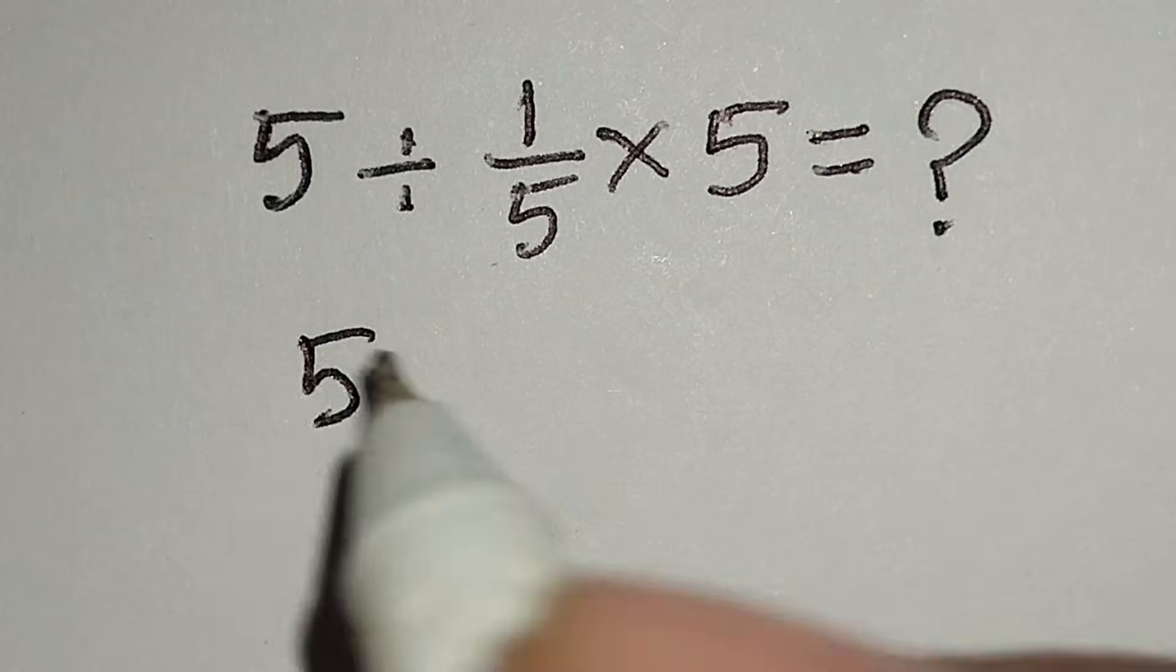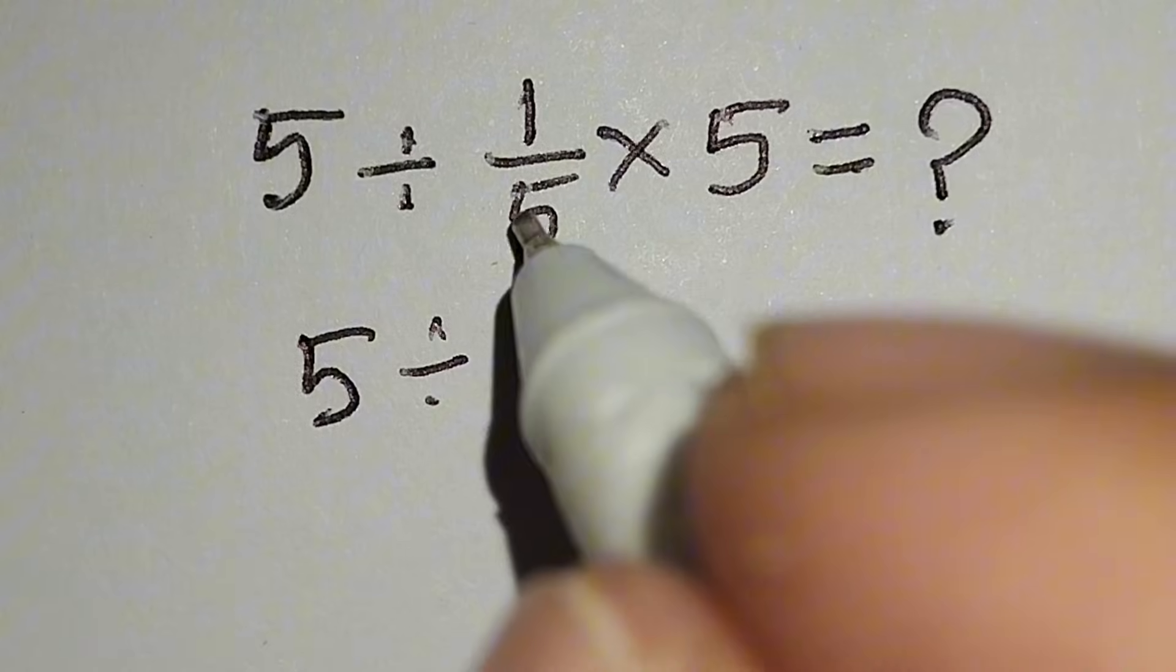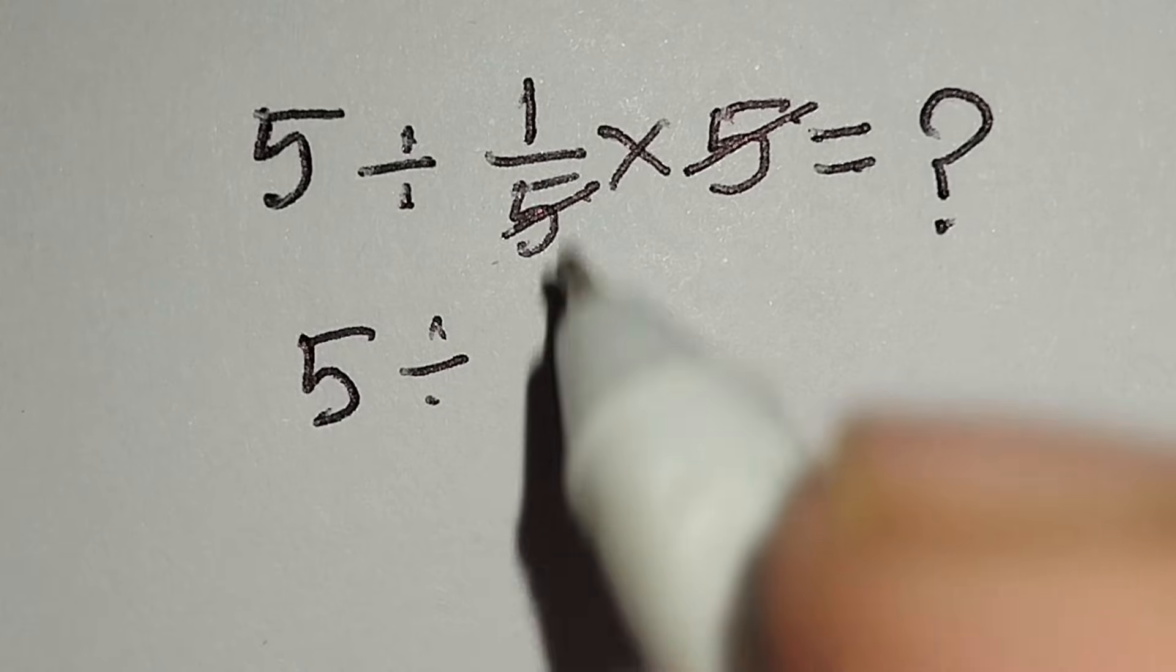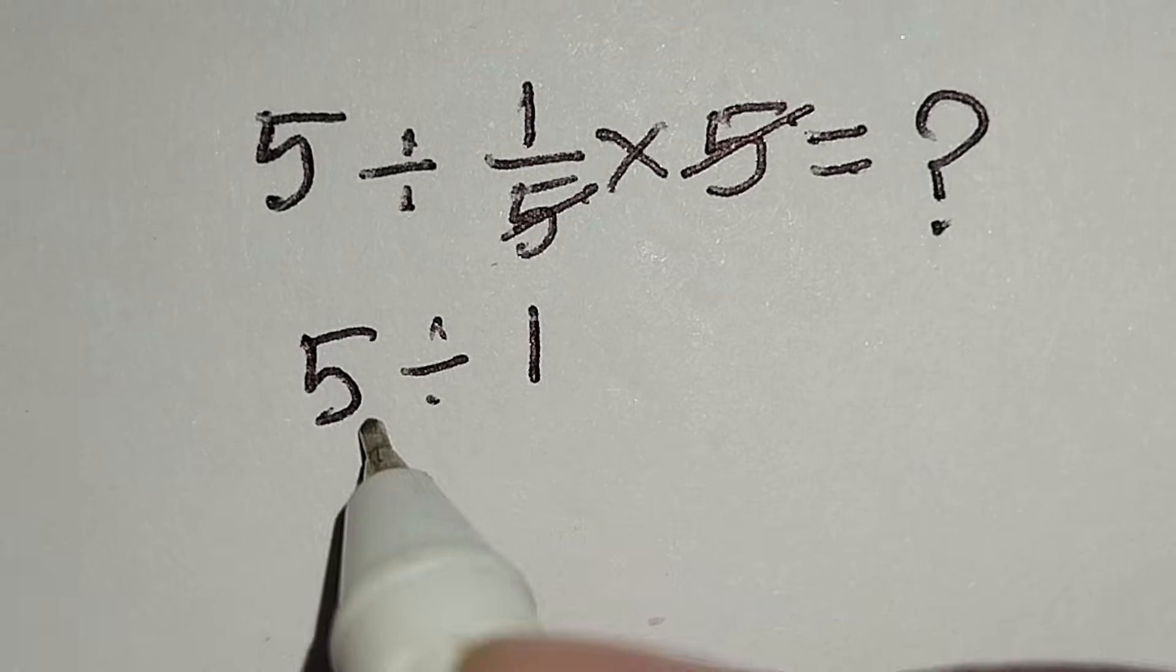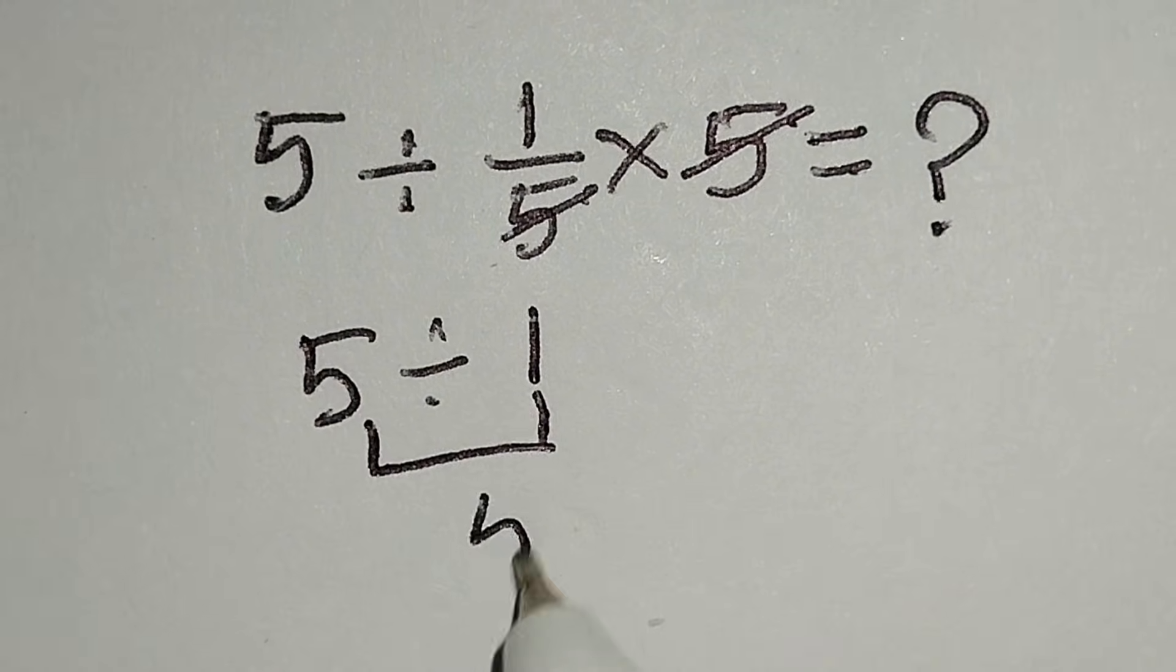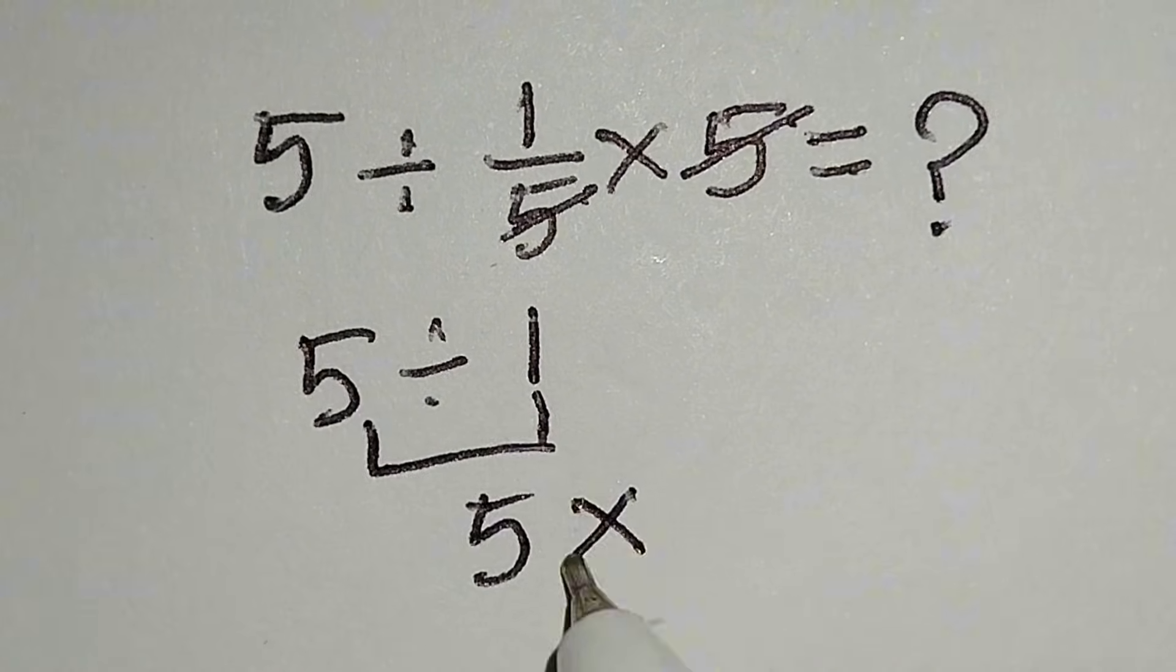Here this 5 divided by this 5, this 5 cancels out, leaving 1. 5 divided by 1 gives us 5. But this answer is not correct.